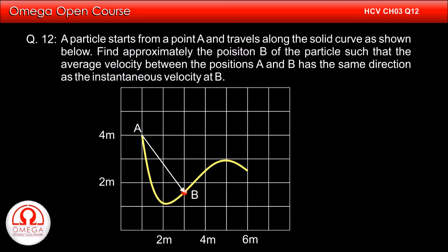To summarize, the direction of average velocity is along the chord joining A to B and the direction of instantaneous velocity is along the tangent at point B. If the direction of both has to be the same, then the direction of chord joining A and B must be same as the direction of tangent at B.